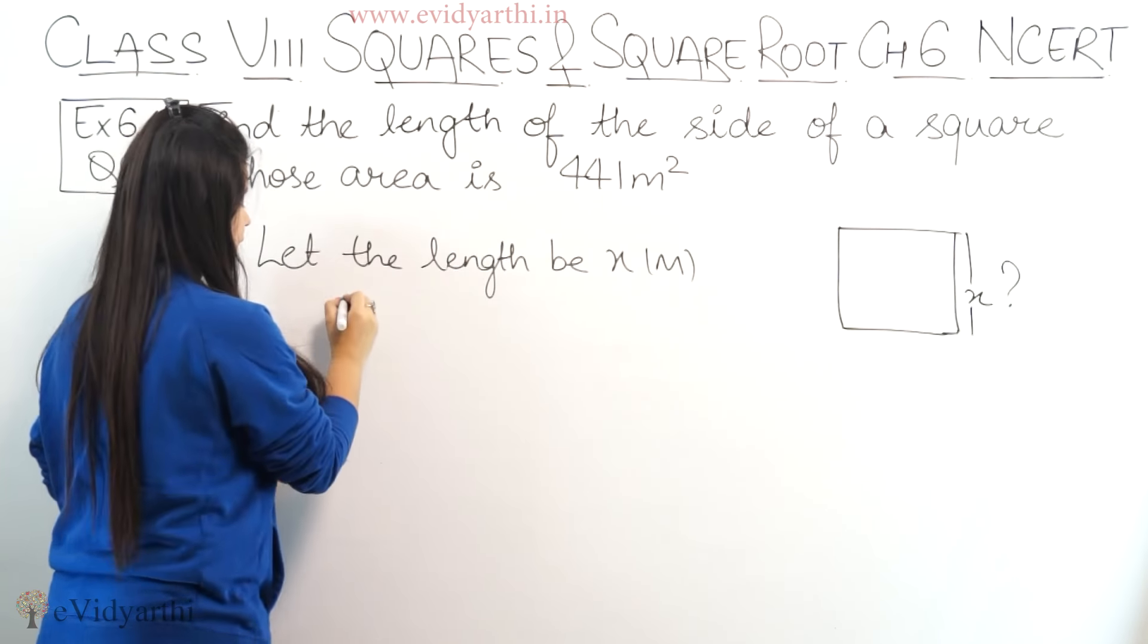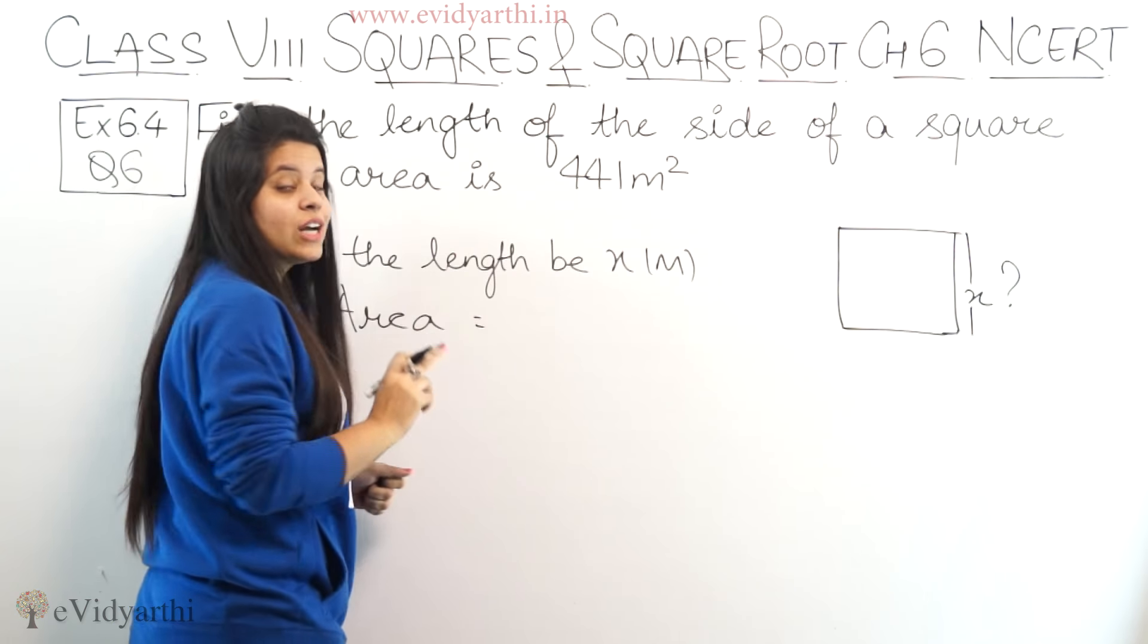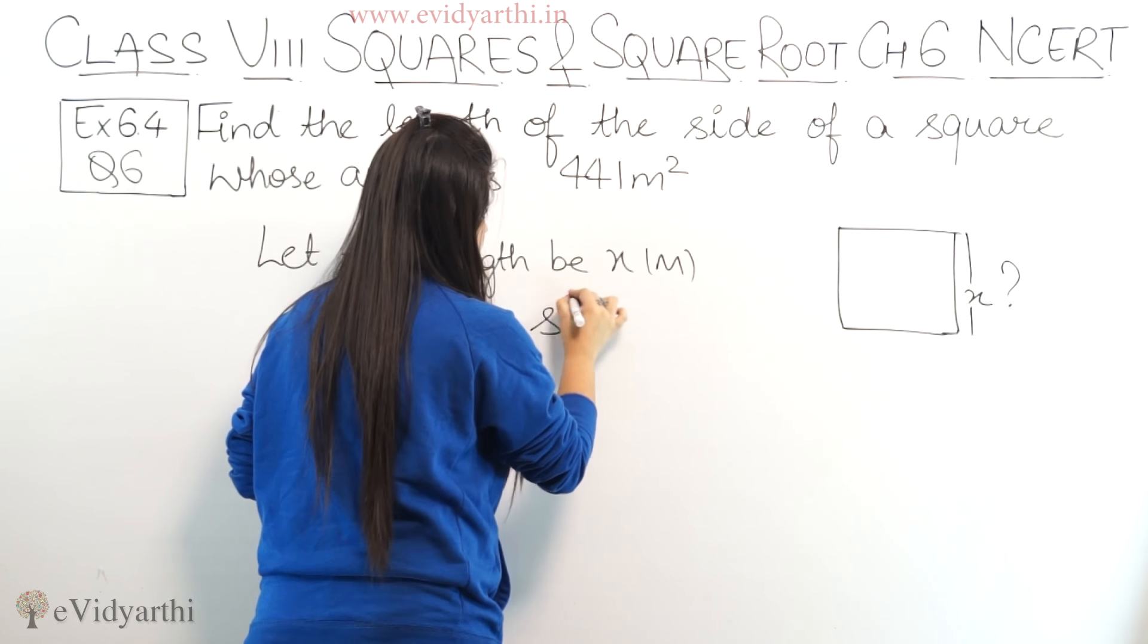What is given to us? Area. What is area? Area of a square is side square.